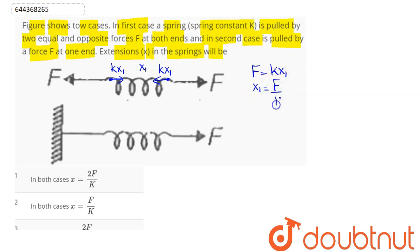So extension in the spring in first case is F/k. Now coming to the second case, if this is our spring and this is the natural length...